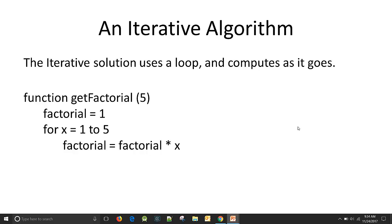So an iterative algorithm. Iterative just means looping. We're going to use a loop. The computer goes through the loop and it calculates as it goes. So this is a simple looping function. This isn't code. This is just an algorithm. Function get factorial for number 5. We're going to pass in an integer 5.